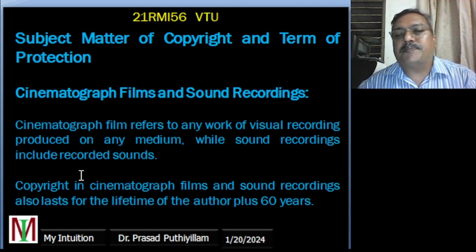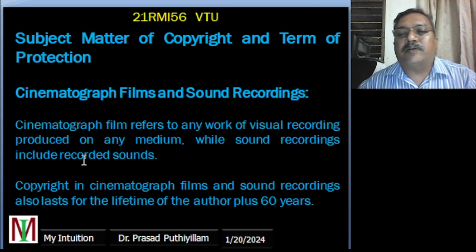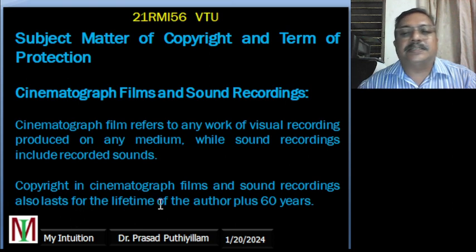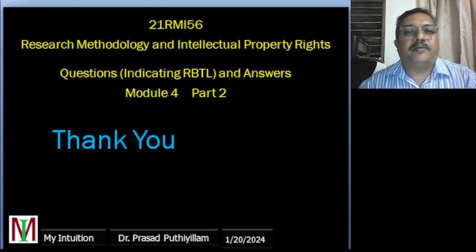Cinematograph films refer to any work of visual recordings produced on any medium, while sound recordings include recorded sounds. Both cinematograph films and sound recordings are protected for the lifetime of the author plus 60 years. This concludes part two of Module 4.